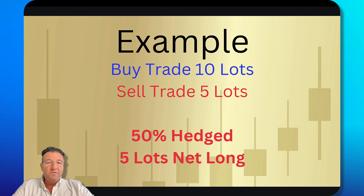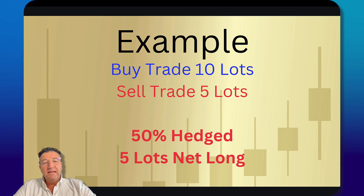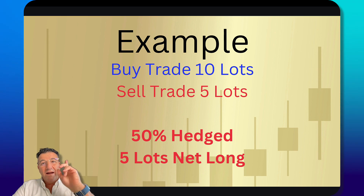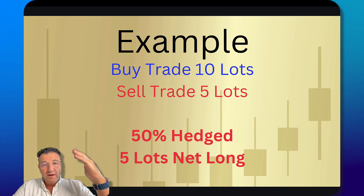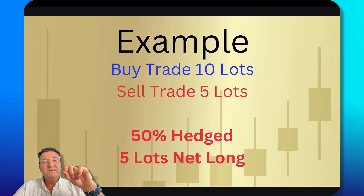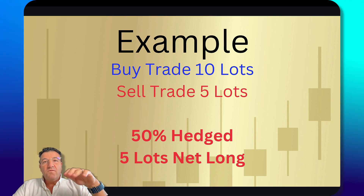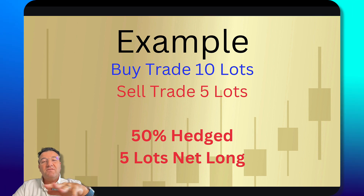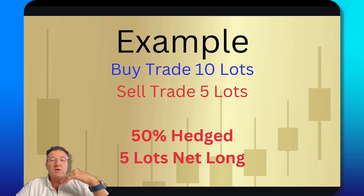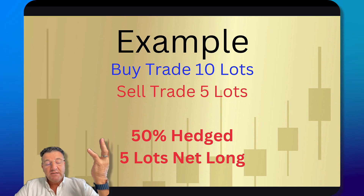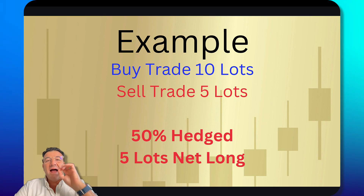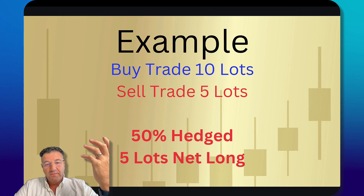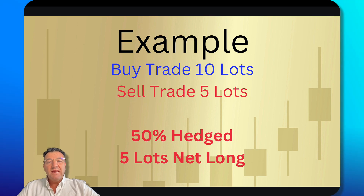In this example, if you've got 10 buy trades at one lot each, that equals 10 lots of buy trades. Then if you've got five sell trades equaling five lots as your hedge trades, you're not 100% hedged — you're 50% hedged, meaning you're five lots net long.